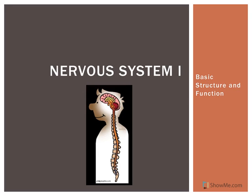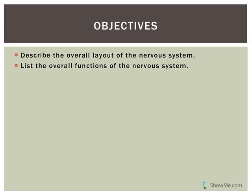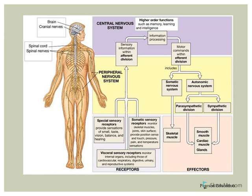This recording is an introduction to the nervous system. It will predominantly give a general overall view of the layout of the nervous system as well as some overall functions. Other recordings will go more in depth, so to start with: the nervous system has two major divisions.